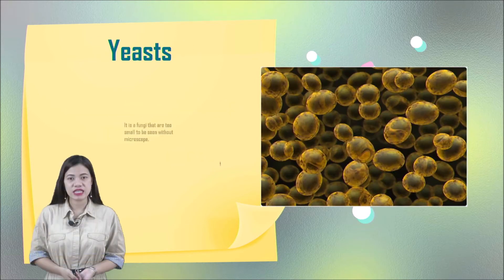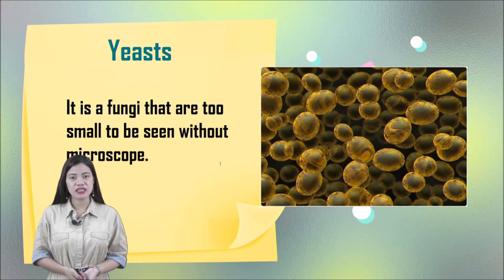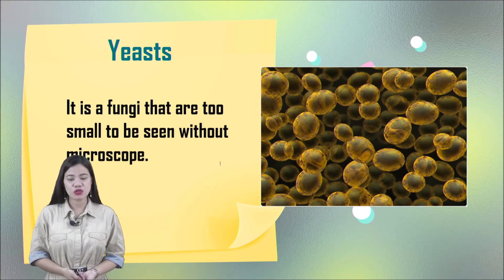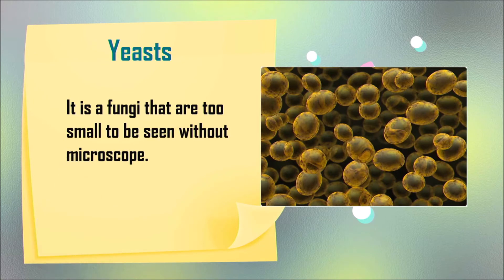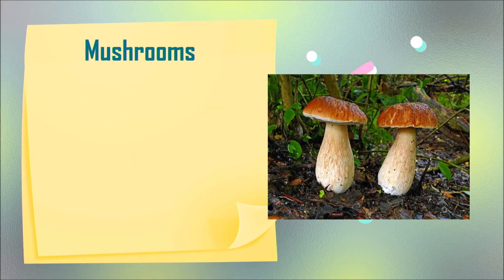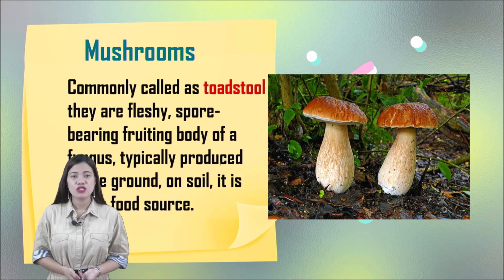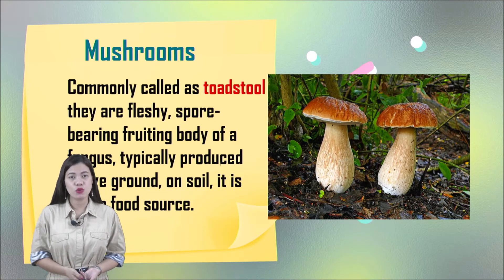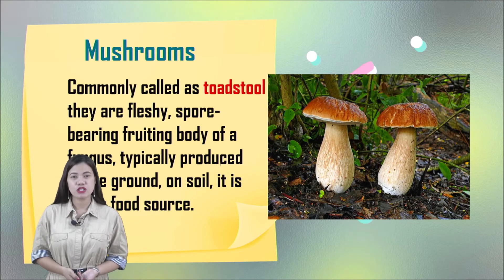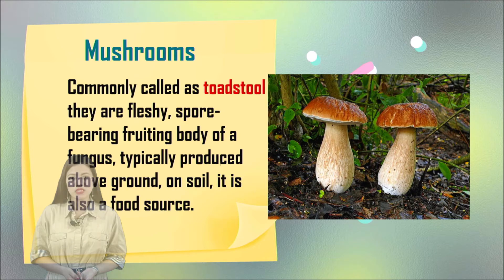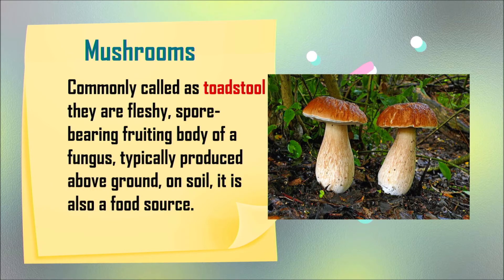Next, we have yeast. Yeast is a fungi that is too small to be seen without a microscope. Sometimes yeast is used to make bread. Next, we have mushrooms. Mushrooms, commonly called toadstools, are fleshy, spore-bearing fruiting bodies of a fungus, typically produced above ground on soil. They are also a food source — we can eat them.